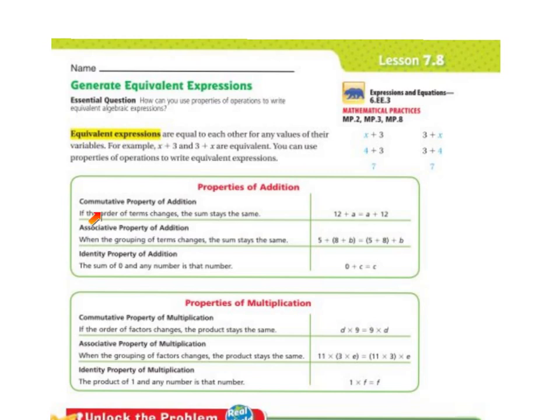Properties of addition: the commutative property means the order of terms changes and the sum stays the same. So 12 plus a is the same as a plus 12.